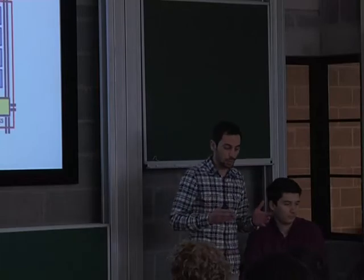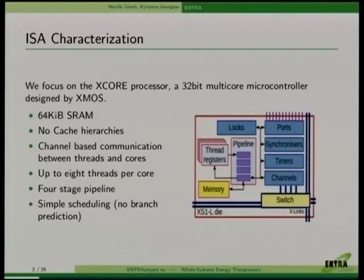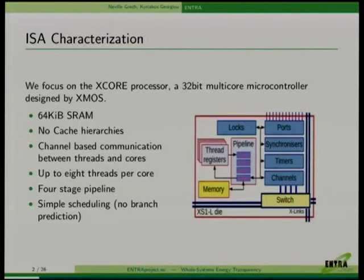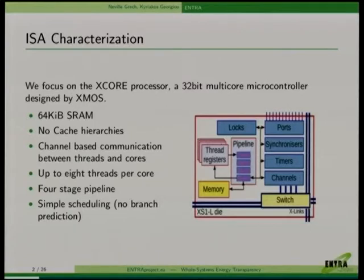The architecture we are currently using for our analysis is the XMOS XCore architecture, whose main purpose is to create hardware components in software, such as USB audio. This architecture is quite unique because it's very predictable. It has 64 kilobytes of SRAM, channel-based communication between threads and core - the communication instructions are actually in the ISA. It has up to eight hardware threads per core, four simple stages of pipeline, and no branch prediction, so the scheduler is pretty simple.